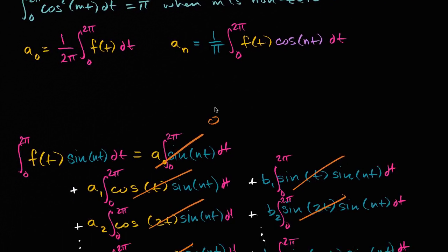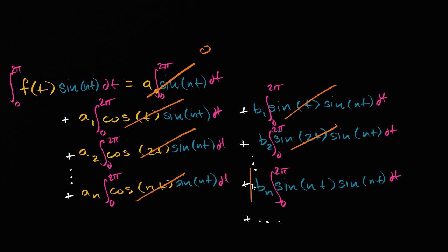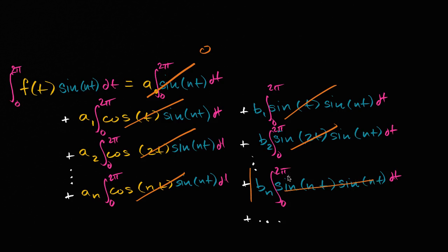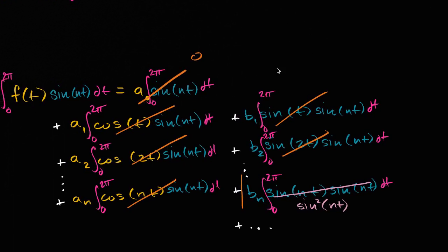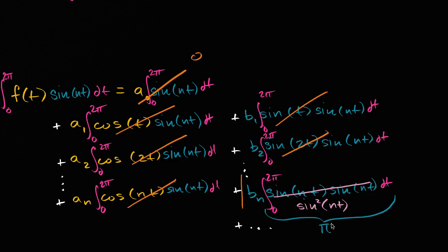We also know that when you take sine of one integer coefficient times t, times sine of a different integer coefficient times t, those are also equal to zero. So really, all you're left with — the only term that does not become zero — is the term where it's sine of nt times sine of nt. That is the same thing as the definite integral from zero to two pi of sine squared of nt dt, and we know that when the coefficient on t is a non-zero integer, this results in pi. So all of that evaluates to pi, meaning b sub n times pi equals this definite integral.